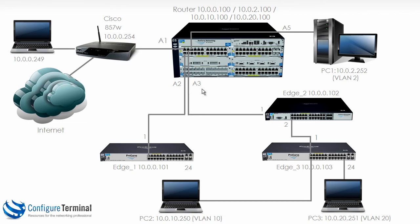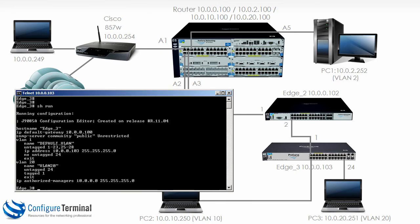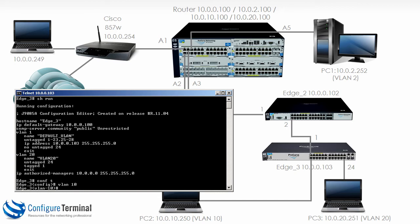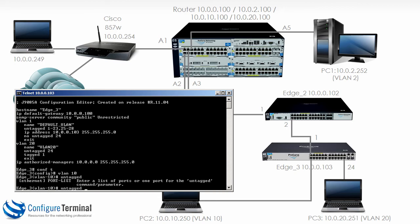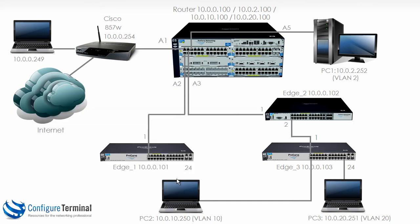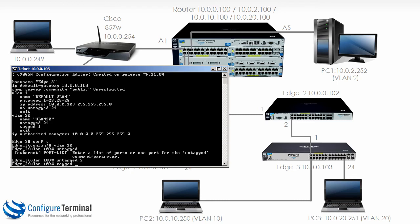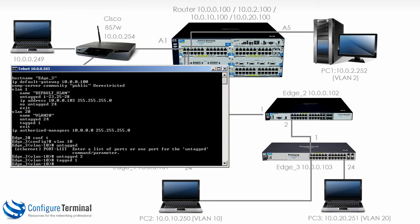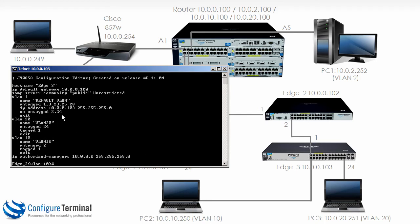On Edge 3, typing 'show run' shows the running configuration. Port 24 is set as untagged for VLAN 20 and port 1 is tagged with VLAN 20. We need to create VLAN 10 and say 'untagged 2' — I have physically unplugged this PC from Edge 1 and plugged it into port 2 on Edge 3. Then we need to say 'tagged port 1' so that tagged frames from Edge 3 to Edge 2 carry VLAN 10. Show run confirms VLAN 10 is untagged on port 2 and tagged on port 1.